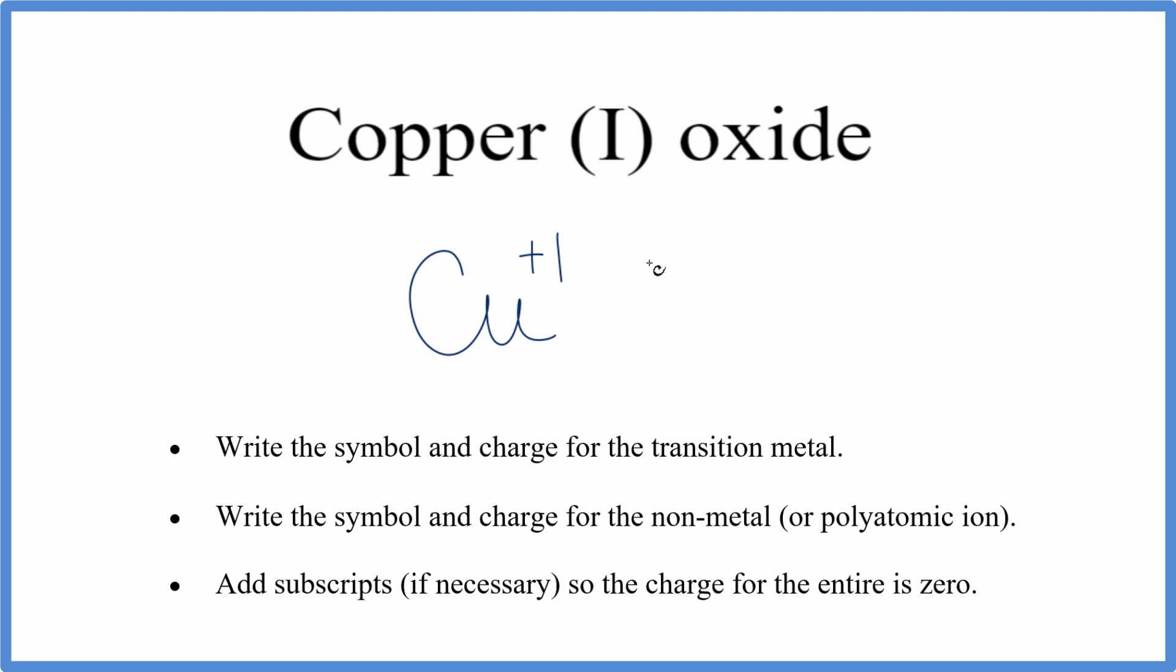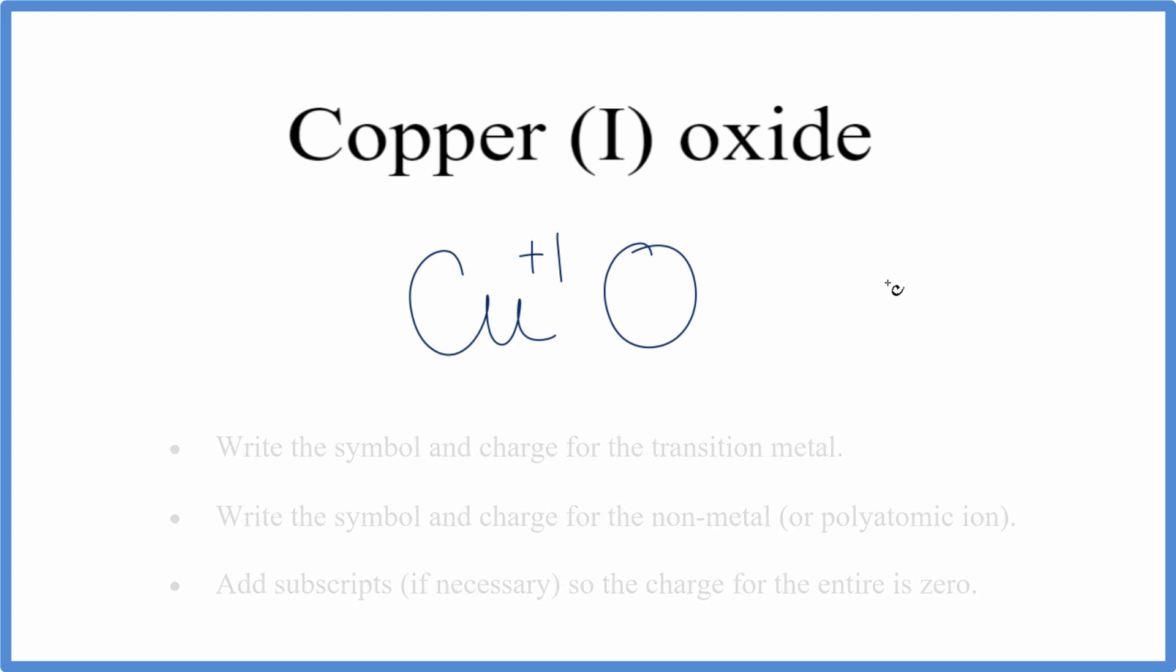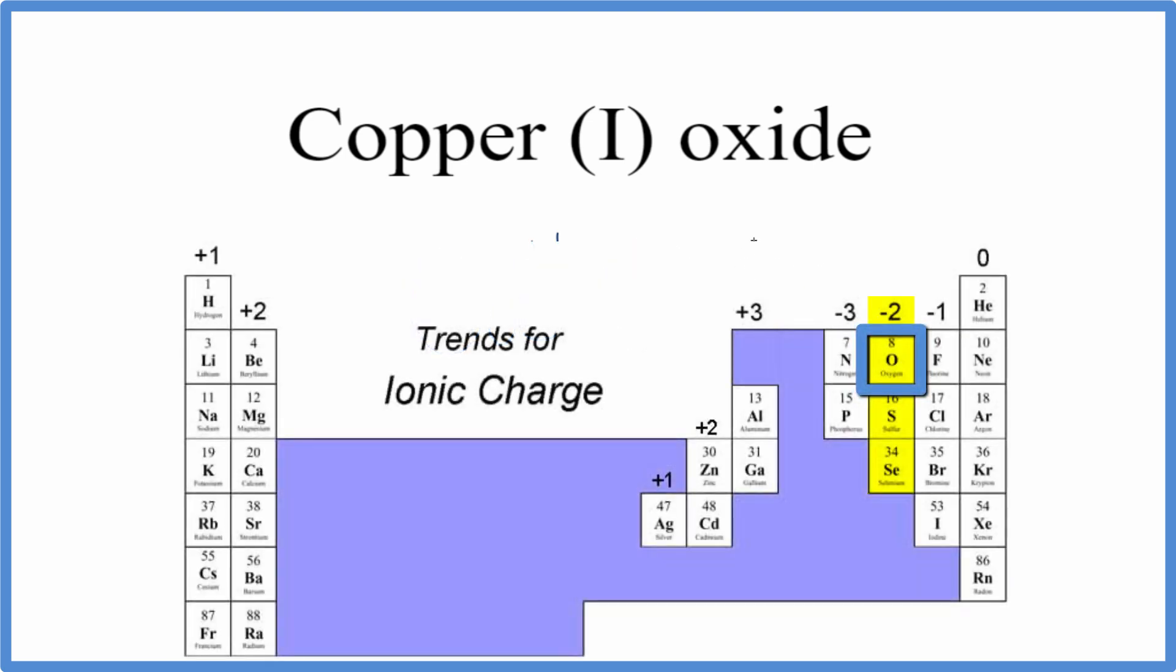The oxide, that's oxygen, so we write O. When we look the charge up for oxygen, oxygen has a charge of minus 2.